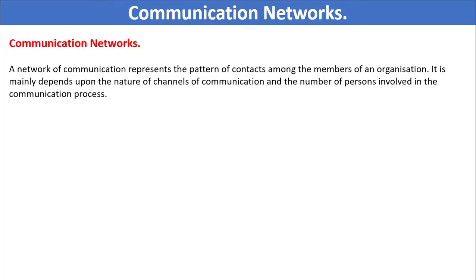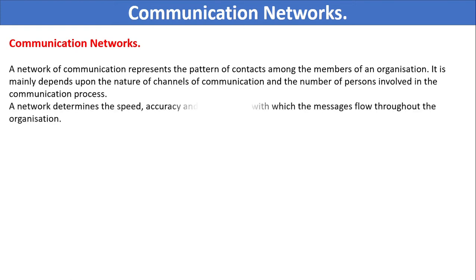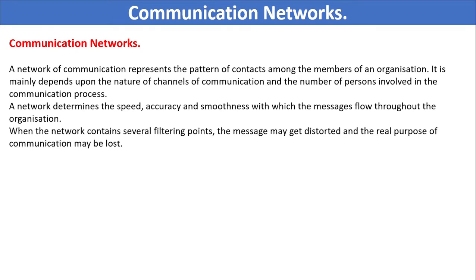What do you understand from Communication Networks? A network of communication represents the pattern of contacts among the members of an organization. It mainly depends upon the nature of the channels of communication and the number of persons involved in the communication process. A network determines the speed, accuracy, and smoothness with which the message flows through the organization. When the network contains several filtering points, the message may get distorted and the real purpose of communication may be lost.